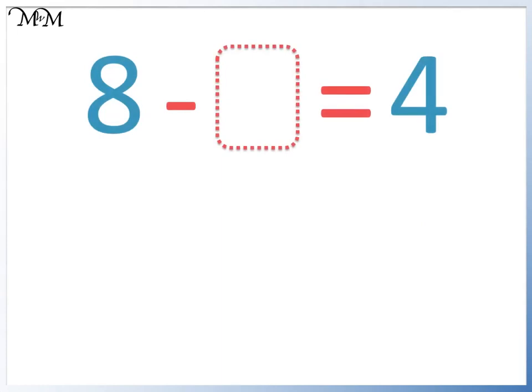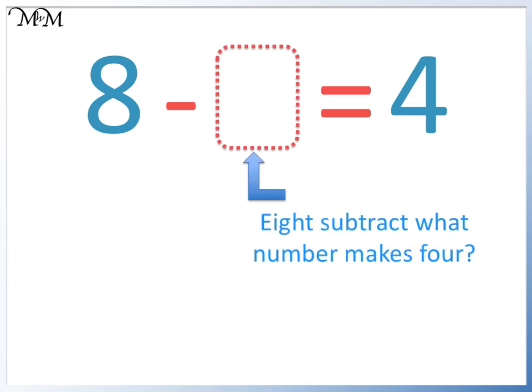In this question, we want to know 8 take away what number equals 4. We can subtract our answer from 8 to find out. 8 take away 4 equals 4.